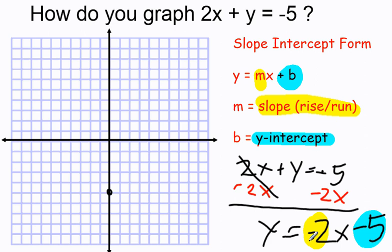And then if I have a slope of negative 2, that means each time to get to my next point, I have a rise over run of minus 2. I go down 2 over 1, another point. Down 2 over 1, another point.